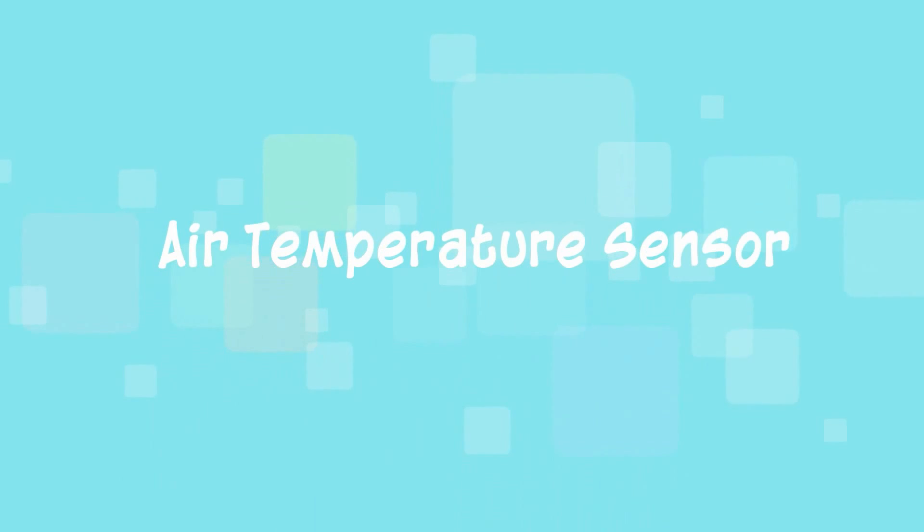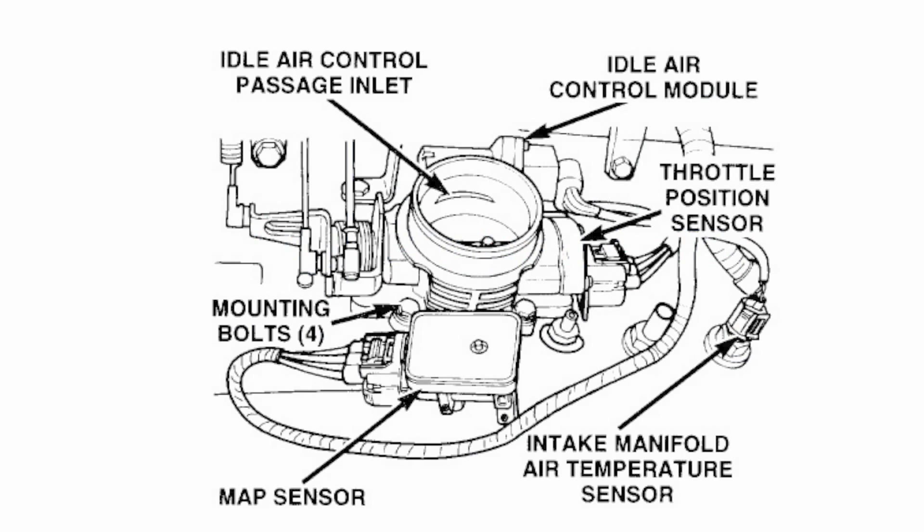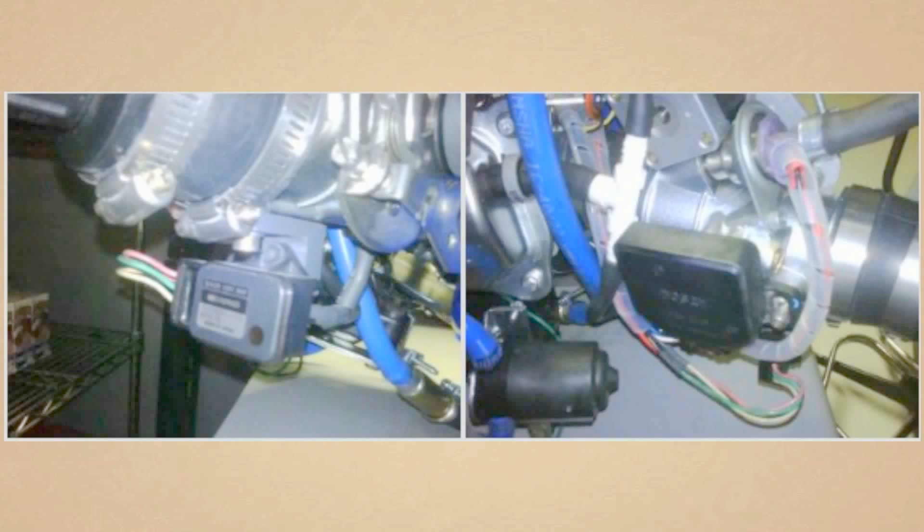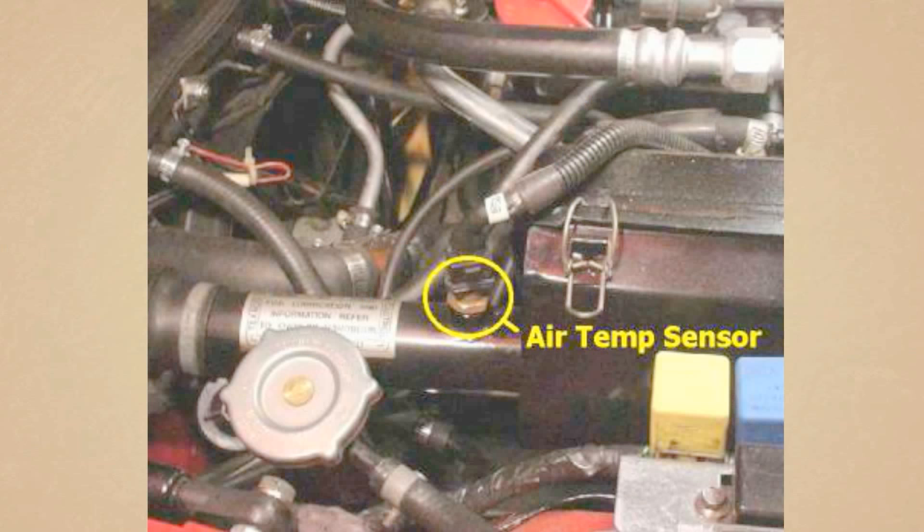Air Temperature Sensor monitors the temperature of air entering into engine. The ECM needs this information to estimate the air density and can prepare a balanced air mixture. It is usually located in air filter box or pipe that is attached to the air filter box.